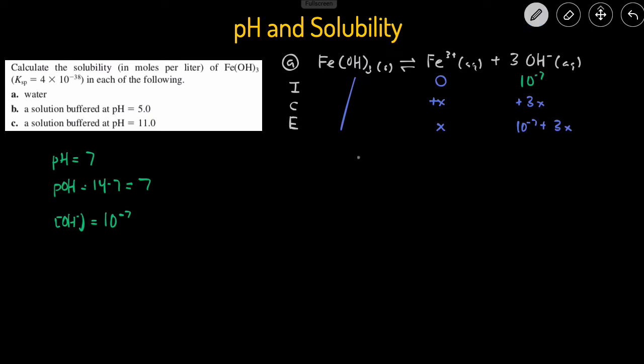Then we can set up the Ksp expression. So Ksp is going to equal the concentration of products divided by the concentration of reactants. So that'll be the concentration of Fe3+ times the concentration of OH- because those are the products. The coefficient of 3 becomes the power. And then now we have the expression. Let's plug in the Ksp value. 4 times 10 to the negative 38 equals the Fe3+ equilibrium value, which is x. And then the OH is going to be 10 to the negative 7 plus 3x. And this is going to be cubed.